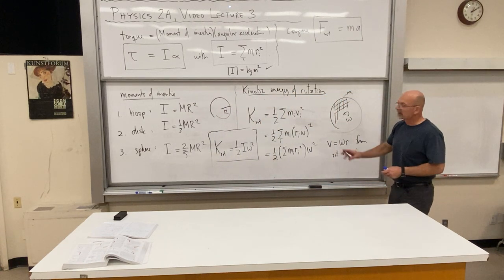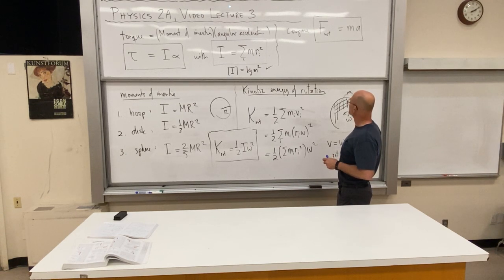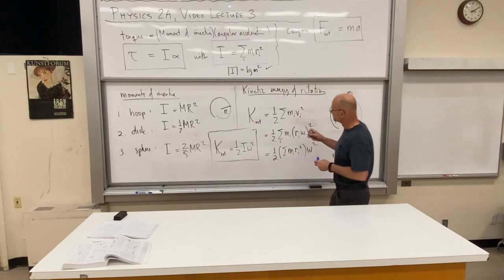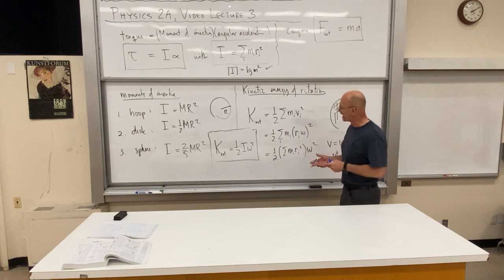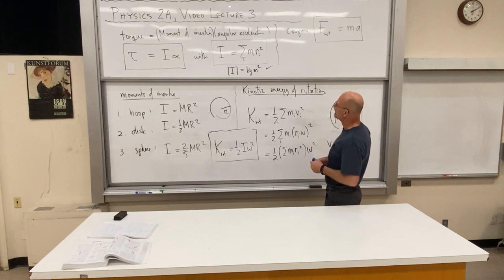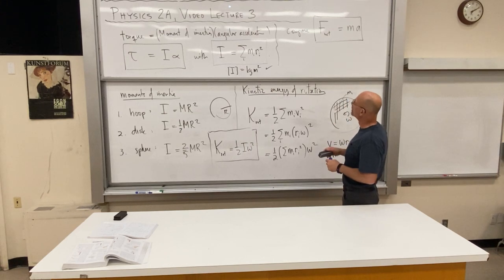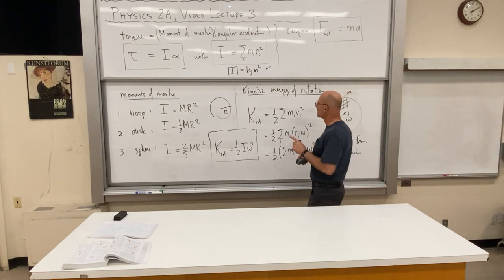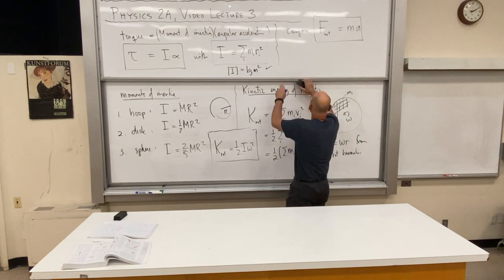We're going to set up comparisons to Newton's law again — a two-column setup with these analogies, because the analogy is complete all the way down, starting with the rotational kinematics equations we had earlier. Now we have everything in place. I'm going to erase the board and set up a rolling race problem.